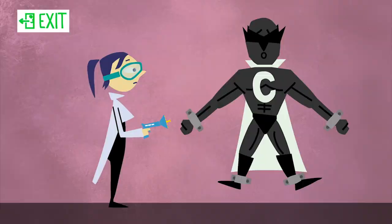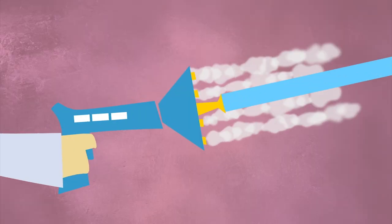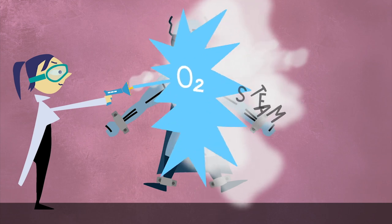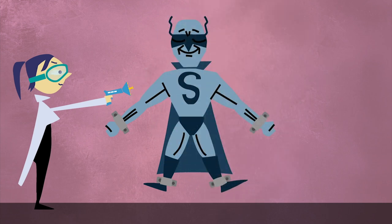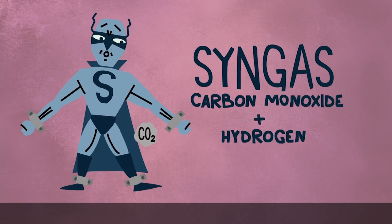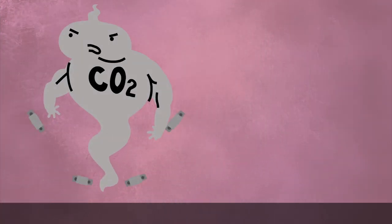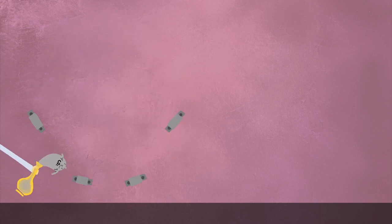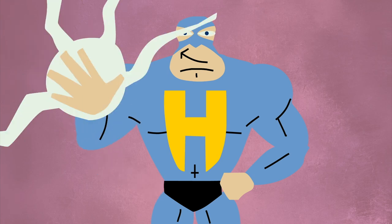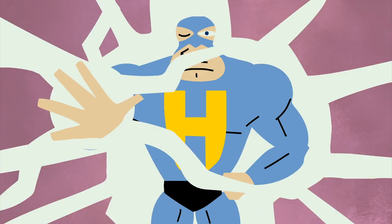Another method is to relieve coal of its CO2 before it even has a chance to be released as exhaust. In this process, steam and oxygen convert coal into a special product called syngas, made up of carbon monoxide and hydrogen and some CO2. Zap that with some water vapor, and the carbon monoxide gets converted into carbon dioxide, which can be isolated. The leftover hydrogen gas is then used as energy to generate electricity, so there's an added bonus.